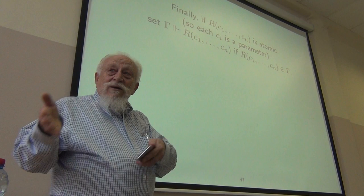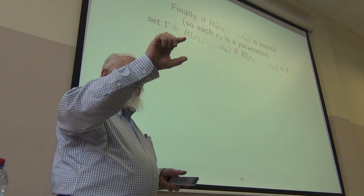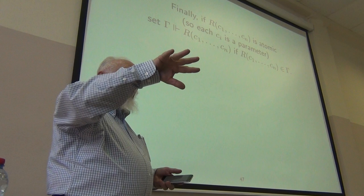So delta is accessible from gamma if, for every universally quantified formula in gamma, all of its delta instances are in delta.